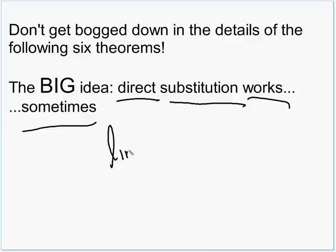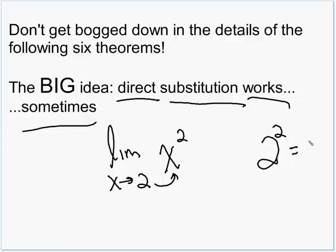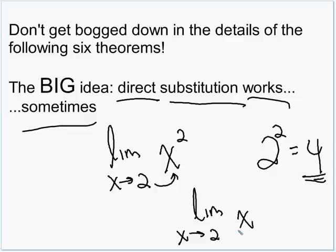For example, what is the limit as x approaches 2 of x squared? There's no chance of dividing by zero or anything, so I can just take the x value approaching 2 and plug that 2 in for x. That gives us 2 squared. We all know 2 squared is 4, so the limit as x approaches 2 of x squared is equal to 4. Just try to substitute that arrow number directly into the function and see if you get an answer.